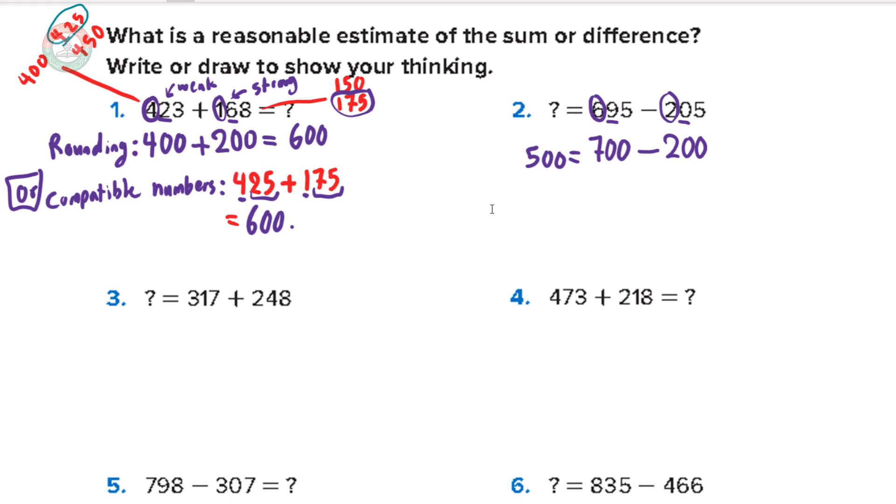Number three, we have here 317 plus 248. Let's use compatible numbers. I see that the 17 and 48, we can use the 25 or the 50. That's why I went to the compatible numbers. But if you used rounding, you're fine. So 317 is really close to 325 plus 248 is really close to 250. If I add 50 plus 25, this is 75. And 200 plus 300 is 500. So we have 575.